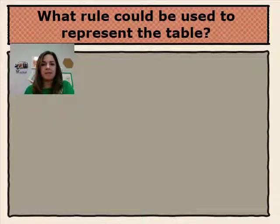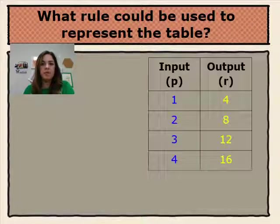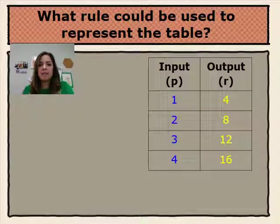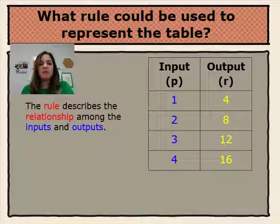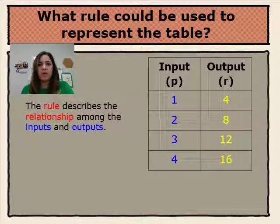What rule could be used to represent the table? Here we have a table where P represents the input and R represents the output. The input is 1, 2, 3, and 4, and the output is 4, 8, 12, and 16. The rule describes the relationship among the input and output. So what is the relationship between 1 and 4, 2 and 8, 3 and 12, and 4 and 16?